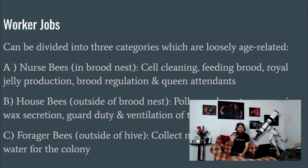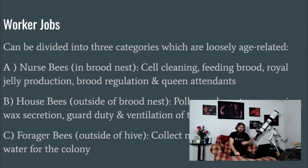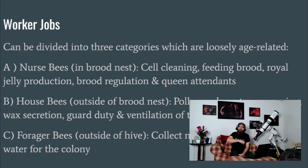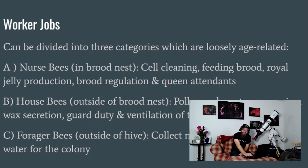After house bees, they graduate to forager duty. Around two or three in the afternoon on a nice sunny day, you can see bees flying around in concentric circles around the hives. Early in your beekeeping career you might mistake this for swarming, but once you see an actual swarm you'll realize it's not the same at all. What they're actually doing is orientation flights — house bees in the process of graduating to forager duty, becoming familiar with their surroundings so they can go out searching for food and water and return to the right spot. Foragers can collect nectar, pollen, propolis, and water for the colony.